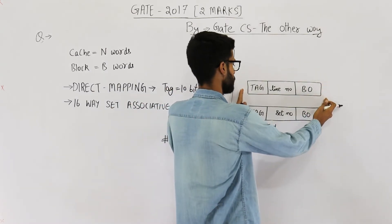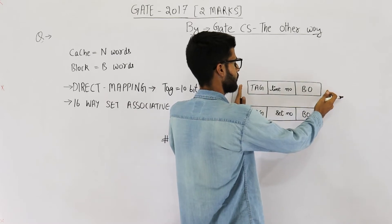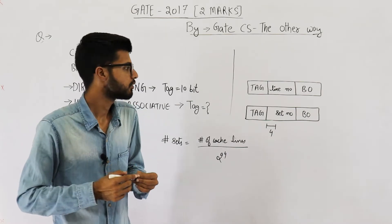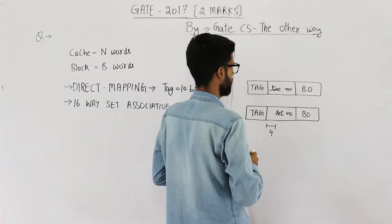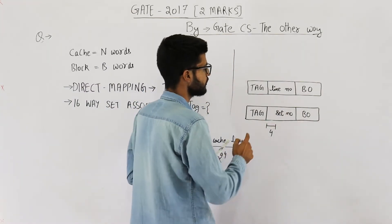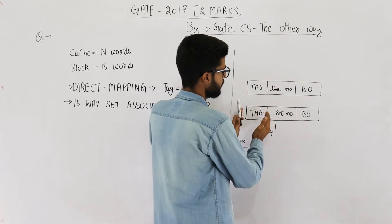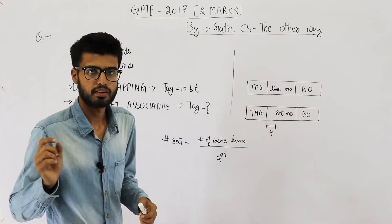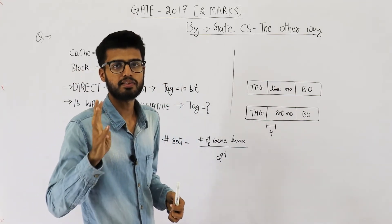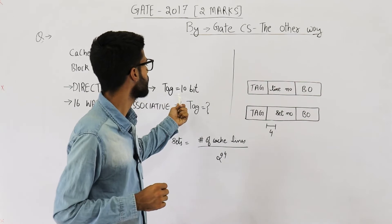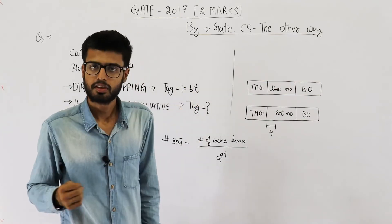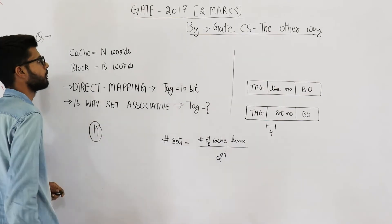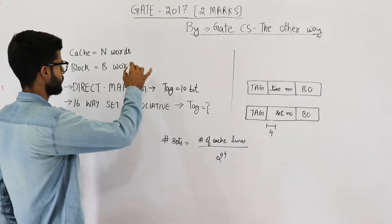The physical address length remains the same because the main memory has the same number of words. Since the set number field shrank by 4 bits and the physical address is unchanged, the tag field must increase by 4 bits. Earlier the tag was 10 bits; now it takes 14 bits. So the answer is 14.